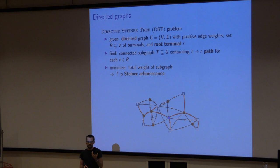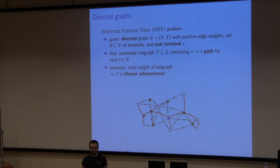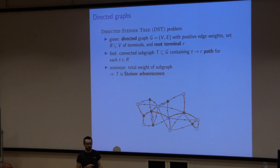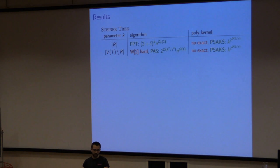What else can we say, and in what directions can we generalize these results? Let's look at directed graphs. In the directed Steiner tree problem, the input is a directed graph, you have a terminal set with one special terminal — the root — and you want a subgraph containing a path from every terminal to the root of minimum weight, giving an optimum Steiner arborescence. The results I showed for the undirected case — what holds for the directed case?